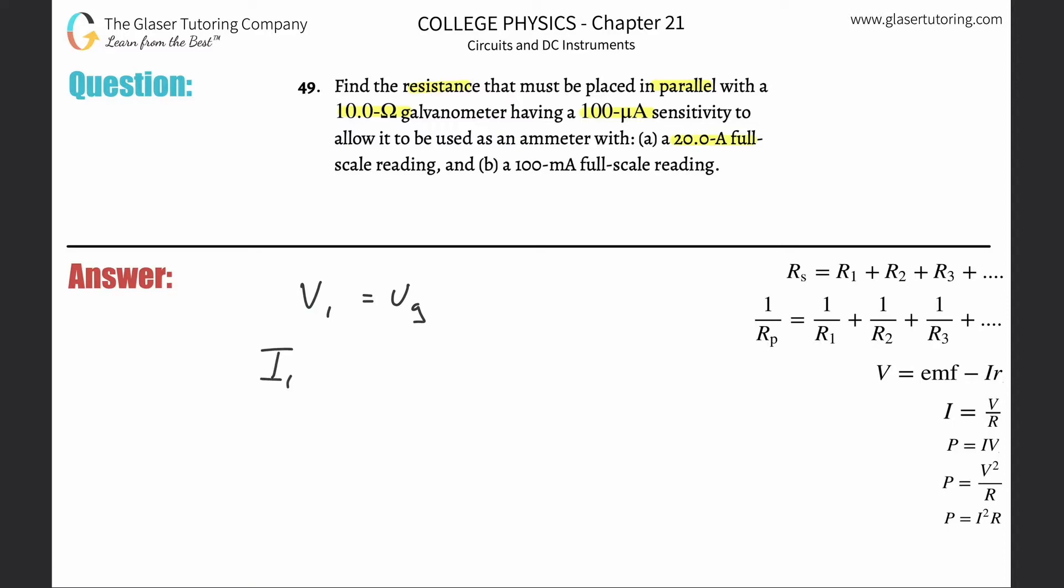So there's going to be I1·R1 is equal to Ig·Rg. We want to solve for R1, so simply divide out the I1 from both sides and voila, there's your beautiful little formula.